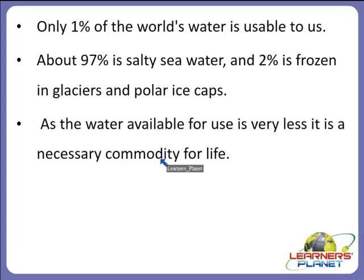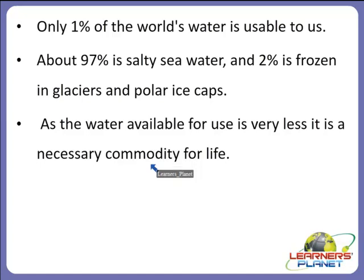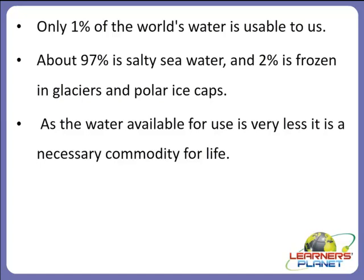Dehydration — lack of water — will kill us faster than starvation, which is lack of food, since the plants and animals we eat also depend on water, and a lack of it could cause both dehydration and starvation. The situation is worsened by the fact that water that looks drinkable can contain harmful elements which could cause illness and death if ingested.